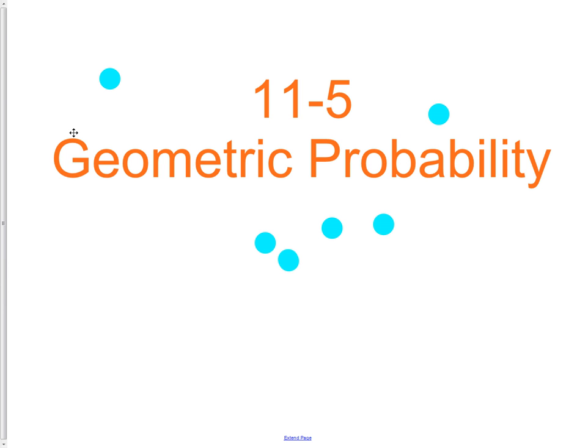Our final lesson is on geometric probability. Probability is something we do not have a specific chapter in our book that handles, but a lot throughout our book we can actually use to do probability type questions.